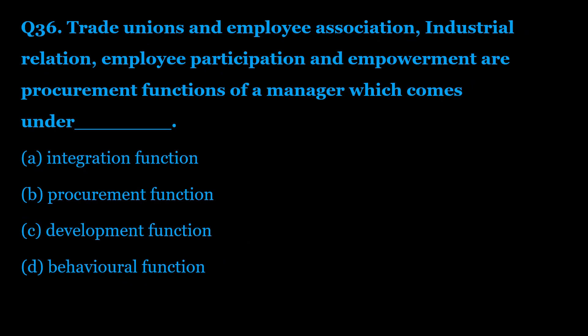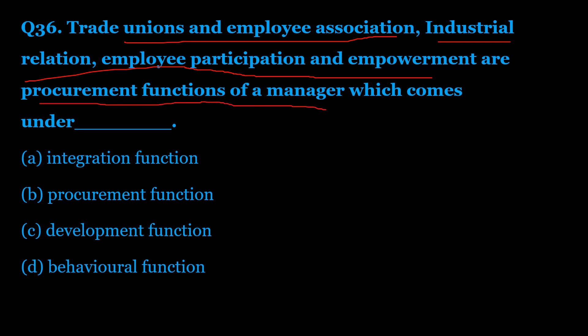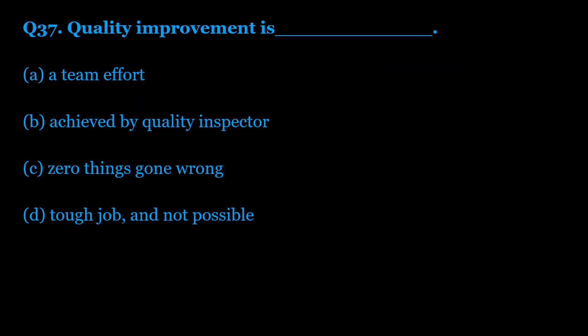Question number 36: Trade unions and employees association, industrial relations, employee participation and empowerment are procurement functions of a manager which come under — Option A: integration function. Option B: procurement functions. Option C: development functions. Option D: behavioral functions. The correct answer is Option A — integration function.